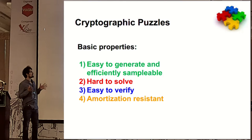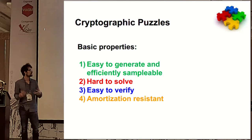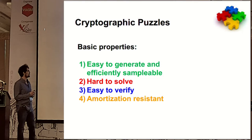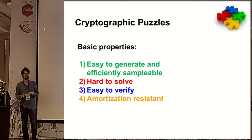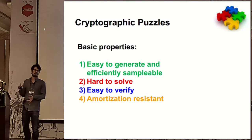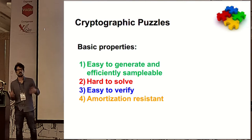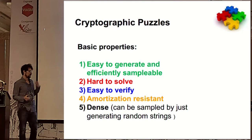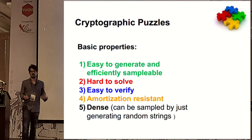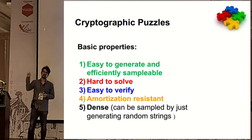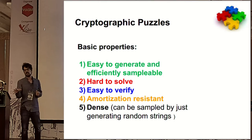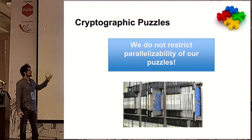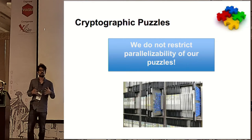A cryptographic puzzle informally is something you can sample and generate quickly and verify quickly, but must be hard to solve — not necessarily intractable but with some parameterized hardness. We also ask that puzzles are amortization resistant, meaning a batch of puzzles does not give a significant advantage over solving them one by one. For our constructions we require a special property called density: if you sample randomly from the puzzle space, with high probability you land on a puzzle.